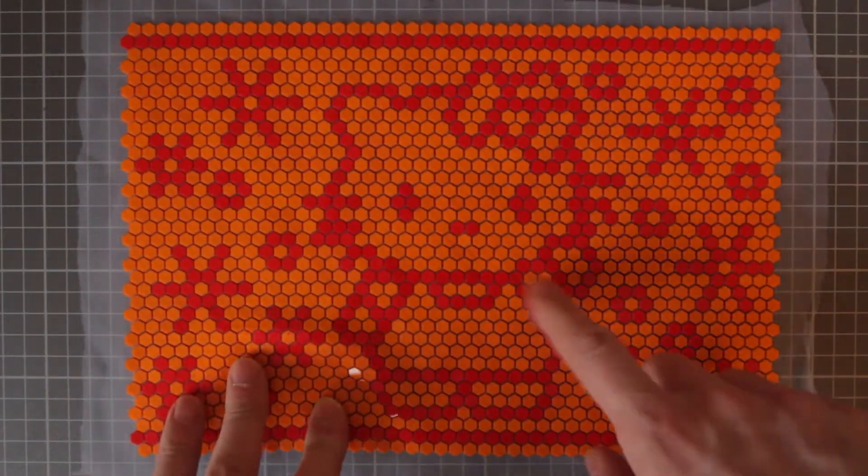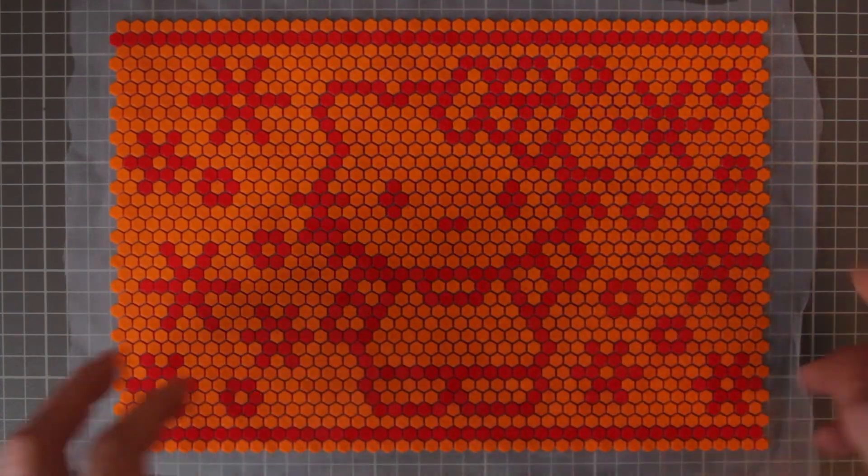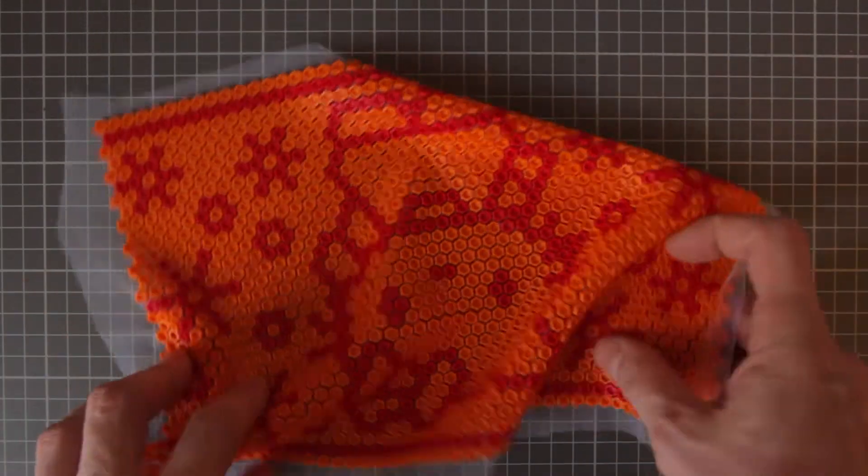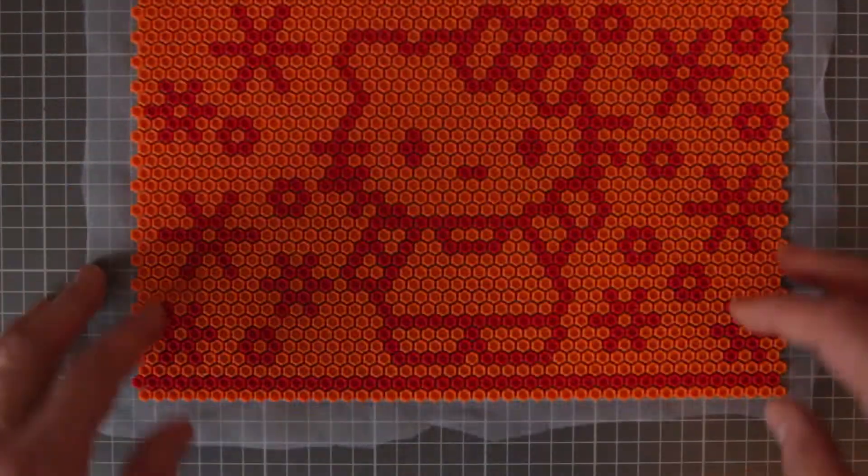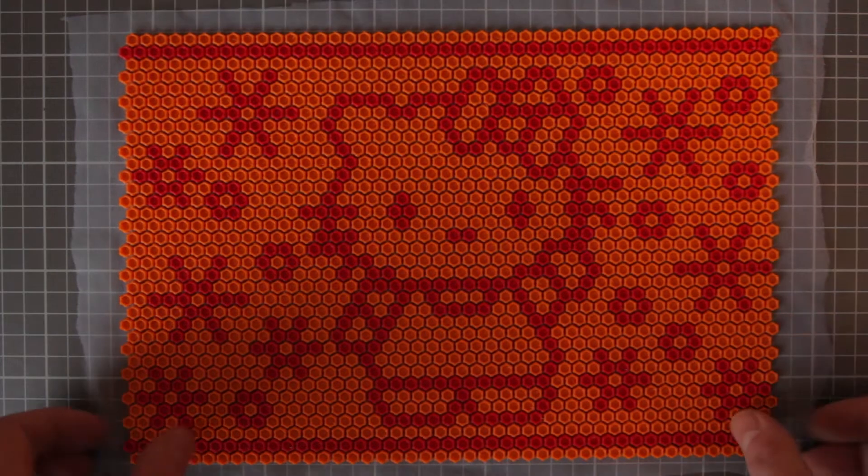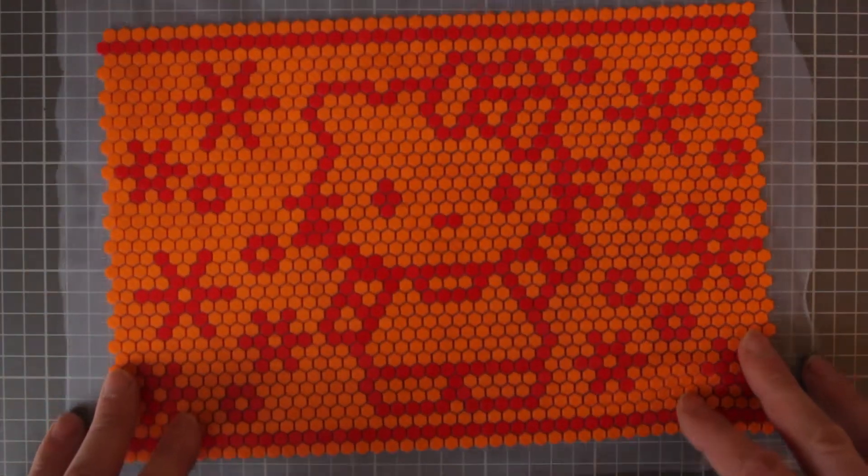And last but not least, got a Hello Kitty one that I made up. I did this in baby blue and pink as well, but I gave it to a friend. So that's that one. And this one I did again wrong. I did it upside down. So there you go. That's the other side, the front side, that's the back side.